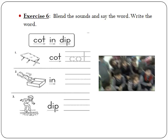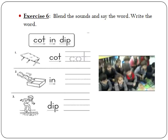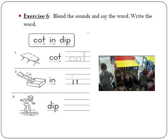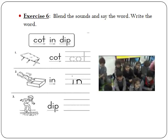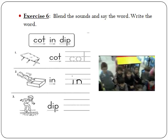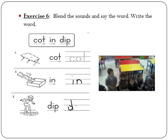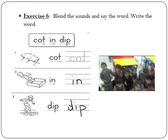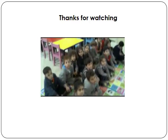Let's move to the second one. I-N. The frog is jumping in. Let's write the word in. Can you give me the letters that I should write? I-N. Let's move to the last word. Dip. The girl can dip her foot in the water. Give me the letters to write the word dip. D, I, and P. Excellent. I want to hear a very big clap for KG2. Thank you for watching. Bye bye.